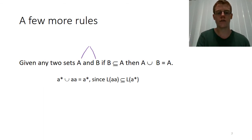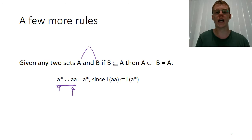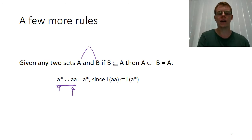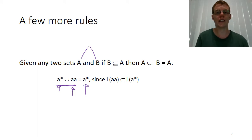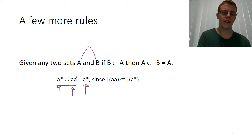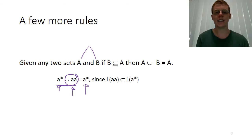So if I have two regexes unioned and one contains the other, I can throw away the smaller one and still have the same overall regex. For instance, A star as a regex includes all elements of the regex AA — which just represents the single string AA — meaning I can simplify the union down to just A star, because unioning it with AA doesn't add anything.